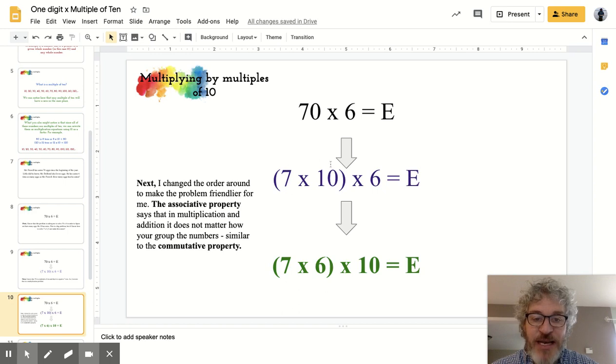Now I'm going to use the associative property of multiplication, and it also applies to addition. And that tells me it doesn't matter how our numbers are grouped. So what I did to make it friendlier or easier for me is I changed the order, and I made it 7 times 6 times 10.